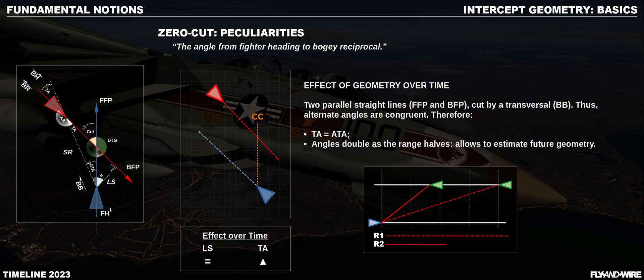Before moving forward, a last quick look at zero-cut. As mentioned, there is a lot more to it and it is really fascinating. In zero-cut, the situation allows us to determine the immediate ATA, as it matches the ATA, and we can also predict how the angle will change over time. As you can see in the sketch, as the range decreases, the angles increase. In particular, the angles double as the range halves. This gives us a tool to eyeball the geometry as it evolves over time.